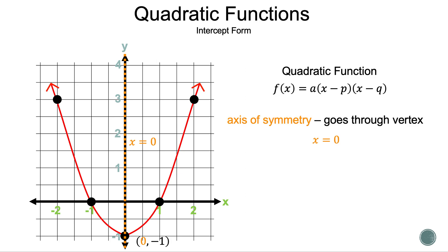One key bit of information we need is the axis of symmetry. The axis of symmetry goes through the vertex — in this case the line x = 0. The great thing about the axis of symmetry is that it cuts the graph in half, so we can pick any two points horizontally and count toward the axis of symmetry and it will be the same distance whether closer to the vertex or further away.